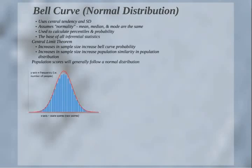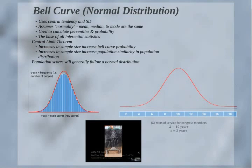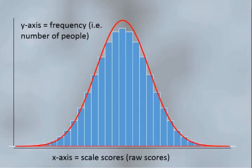Here's your basic bell curve. There's a short video I want to show you that really demonstrates the bell curve, and we'll apply the bell curve for members of Congress as an example. On the y-axis on the left is the frequency of people — the number of people with a particular score. On the x-axis are your raw scores or your x variable.